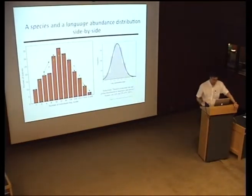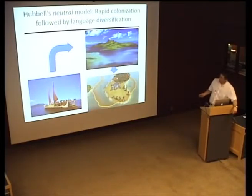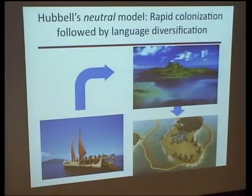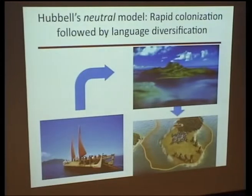Let's think about this caricature of the model I have in mind. Imagine a population that arrives on an island with no human beings before. This population is going to grow and colonize the island. Let's assume that the process of colonizing the island is much faster than the process of giving origin to new languages. So this population colonizes the island, and once the island is fully occupied, language starts diverging. That's the model I have in mind. Now let's start using the ideas of neutral theory.